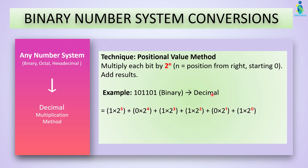Let's see how to solve this. The number is in binary and we need to convert it to decimal. We multiply each digit by 2 raised to its positional power: 1×2⁵ + 0×2⁴ + 1×2³ + 1×2² + 0×2¹ + 1×2⁰. Write the positions from right side: 0, 1, 2, 3, 4, 5. Now solve the powers and add the values — the answer will be 45 in decimal.